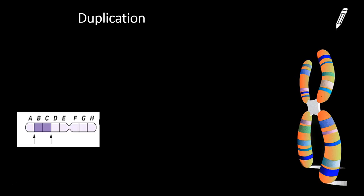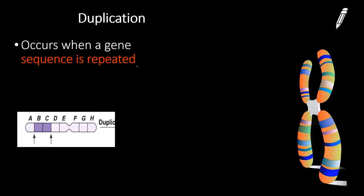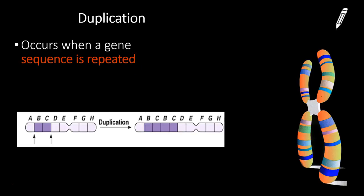The next one is duplication. And just like it sounds, we're going to duplicate a copy of some genes. So this is when a sequence of genes is repeated. The mutated chromosome might go from A, B, C, D to A, B, C, B, C, D. And it has an extra copy of these genes in the chromosome now. And that would be duplication.